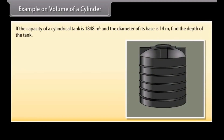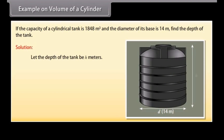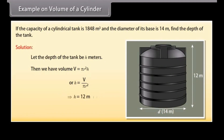If the capacity of a cylindrical tank is 1848 m³ and the diameter of its base is 14 m, find the depth of the tank. Let the depth be H meters. Using V = π × R² × H, we get H = V ÷ (π × R²), which gives H = 12 meters. Hence the depth of the tank is 12 meters.